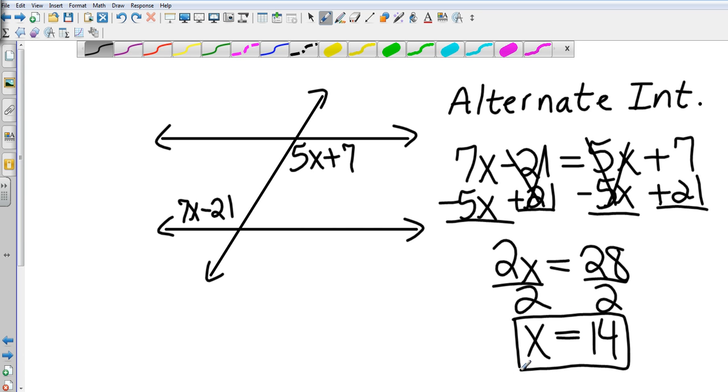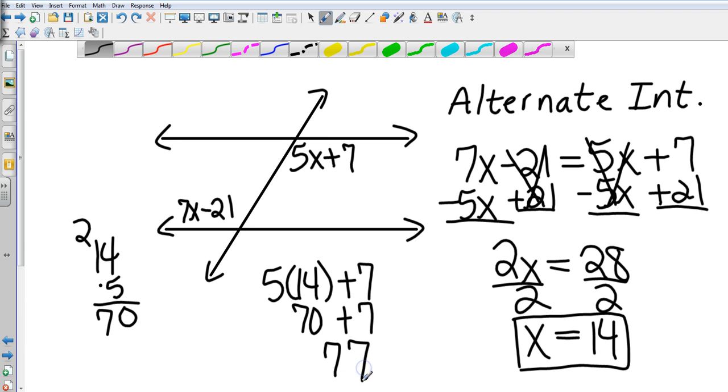To find one of the angles I'm going to sub it back in. We've got 14 times 5, that's going to be 70, and I add that and I get 77. So the x value is 14 and the actual angle value is 77.